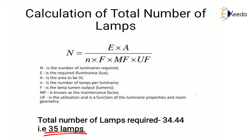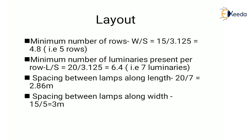These 35 lamps are to be uniformly distributed in the classroom. For the layout, the minimum number of rows = width / spacing = 15 / 3.125 = 4.8, so we require 5 rows. The minimum number of lamps in each row = length / spacing = 20 / 3.125 = 6.4, so 7 lamps per row. Spacing along the length is 20 / 7 = 2.86 meters, and spacing along the width is 15 / 5 = 3 meters.